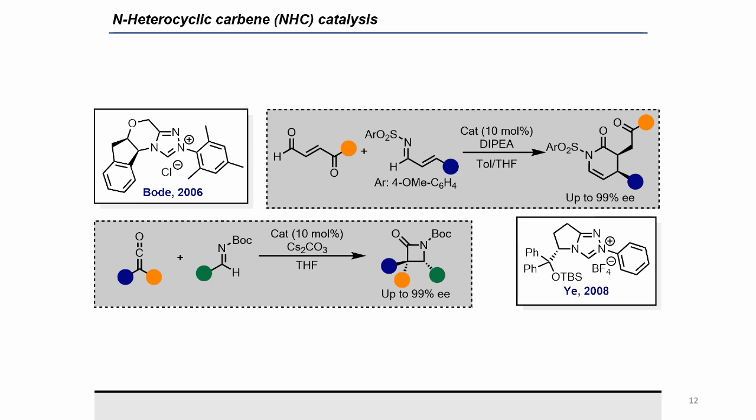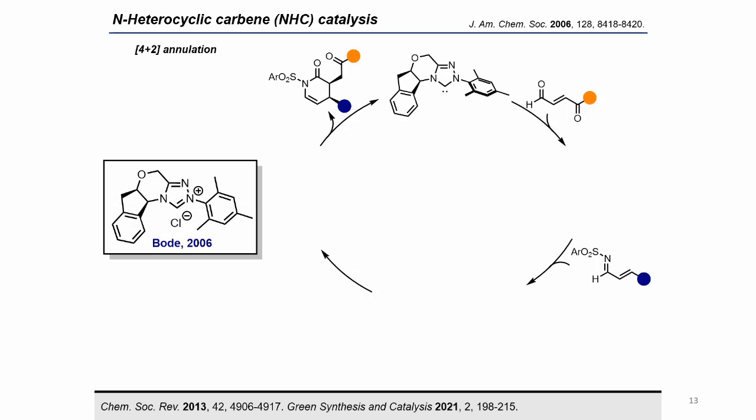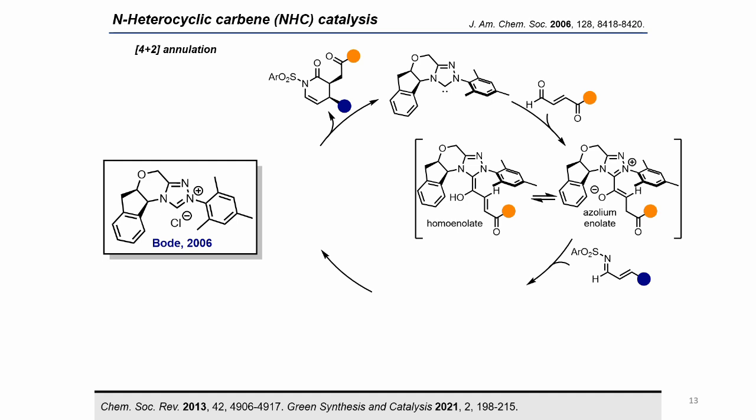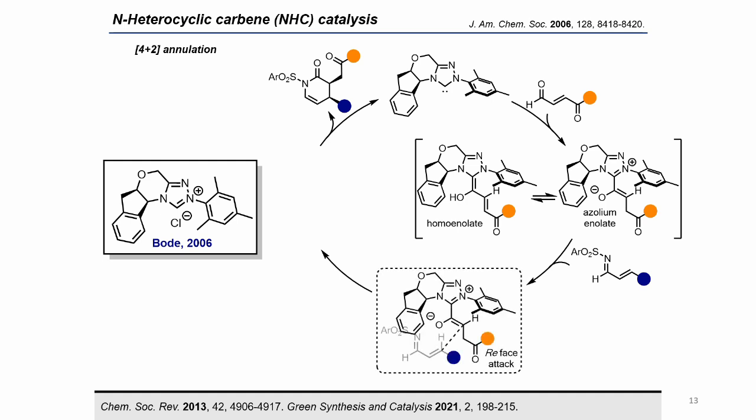This is the case of the enantioselective annulation reactions reported by Bode and Yee. Following the applications of bicyclic triazole-NHCs, in 2006 Bode reported the aza-Diels-Alder reaction of alpha-beta unsaturated aldehydes with conjugated imines. The isomerization of the Breslow intermediate forms the corresponding chiral azolium enolate. This enolate undergoes an initial 1,4-addition to the imine, followed by an intramolecular cyclization, leading to a six-membered lactam with two contiguous chiral stereocenters.